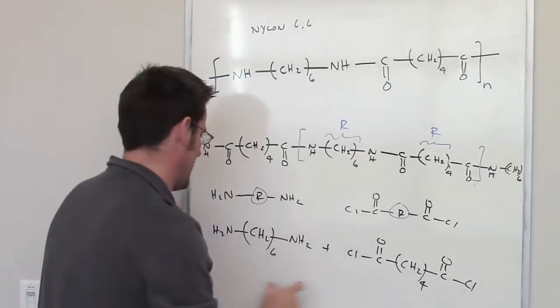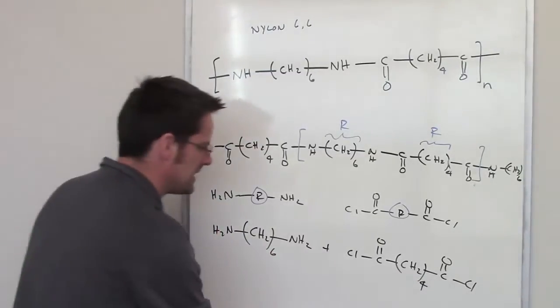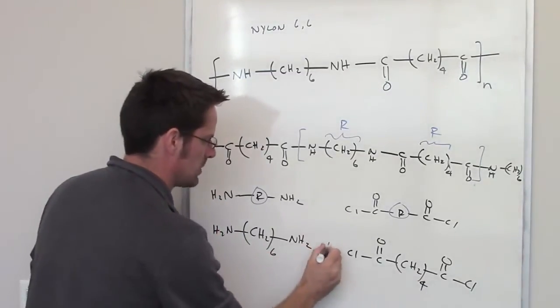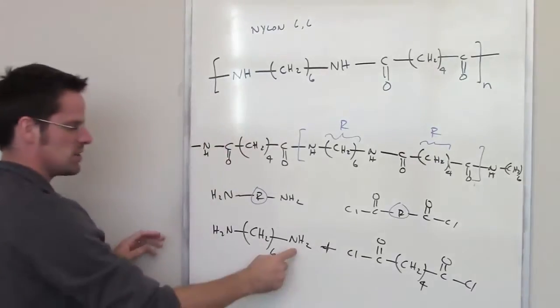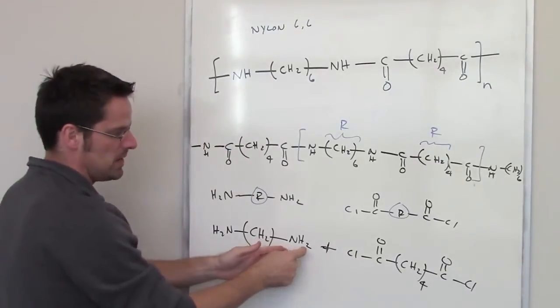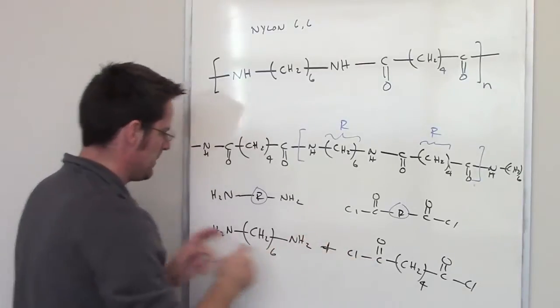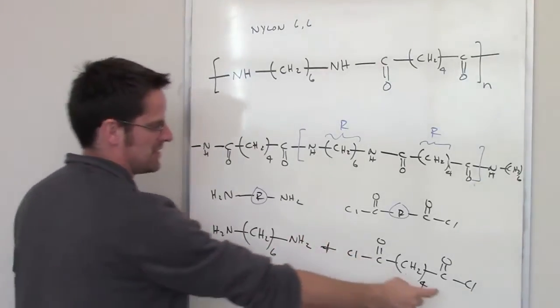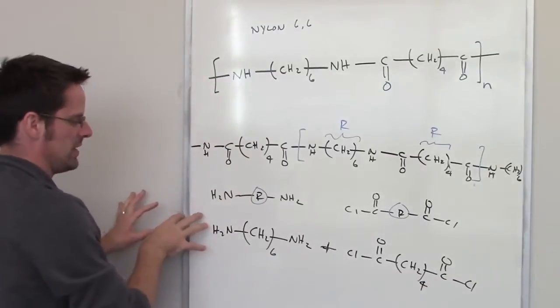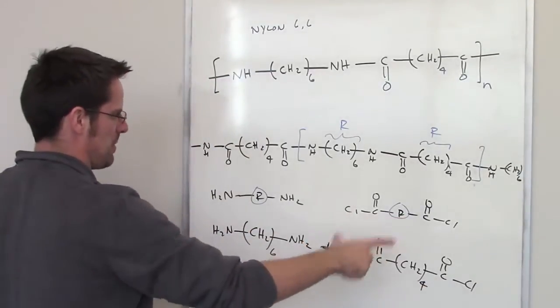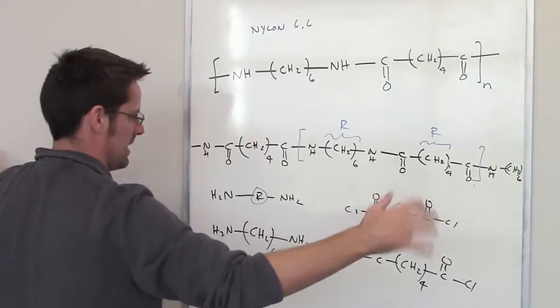It's a diacid chloride reacted with a diamine. If you reacted these two molecules together, an individual nitrogen on one side would displace the chlorine from this diacid chloride and take its place. The nitrogen on the other side would displace another chlorine from another molecule, and then another diamine would do the same on both sides.